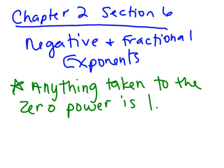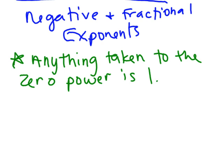Anything taken to the 0 power is 1. So you don't have to do any work when you see something's taken to the 0 power. That means the whole thing becomes 1. So if we have 3 to the 0 power, what do you suppose that equals? 1.